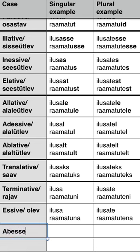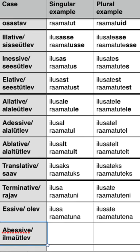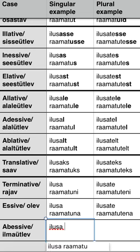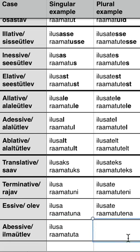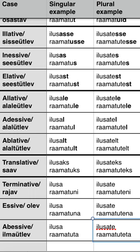The third case would be ABESSIVE — in Estonian it's 'ilmaütlev'. Again, 'ilusa raamattu', and we're going to add 'ta' at the end. The same exactly for the plural: 'ilusate raamatuteta'. An example sentence: 'I feel very bad without a beautiful book' — 'Ma tunnen ennast väga halvasti ilusa raamatuta'.